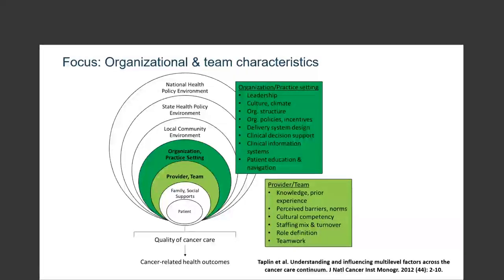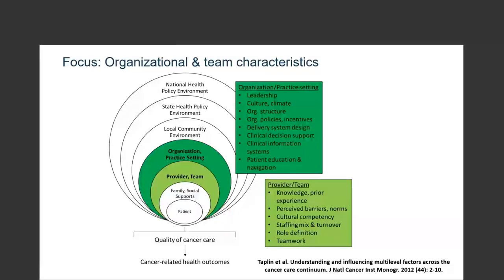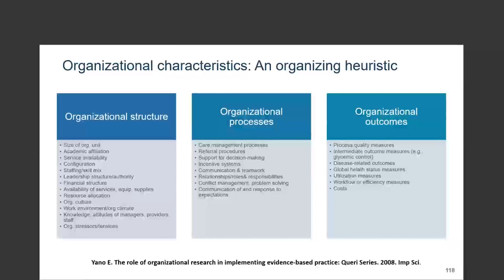I'm preaching to the choir here. These are clearly only two levels in this comprehensive model, but they are incredibly important because they exert influence on a range of care delivery processes and outcomes. This afternoon I hope we can dig a little bit deeper and start to think about some of these organizational variables and characteristics in terms of organizational structure, process, and outcomes.